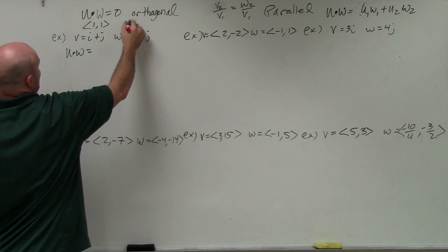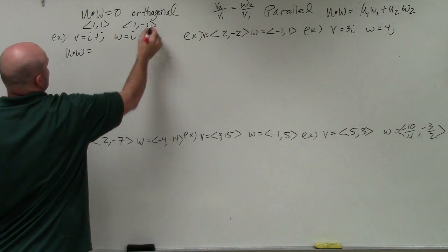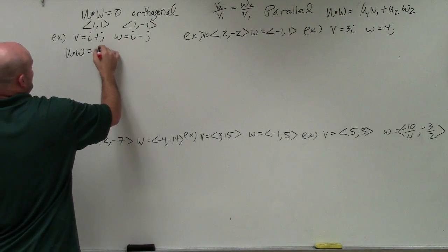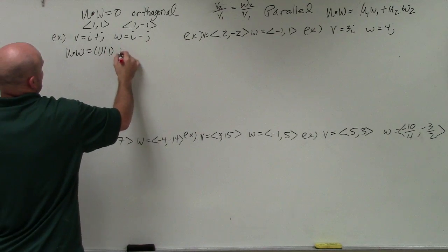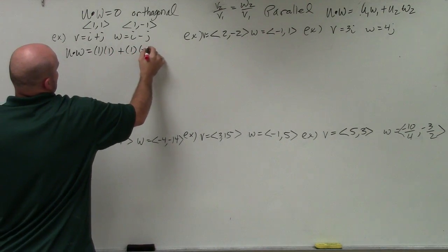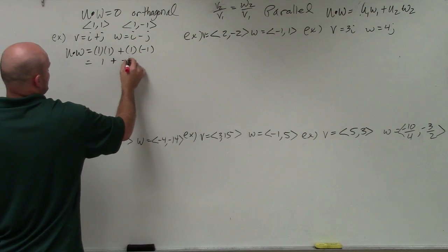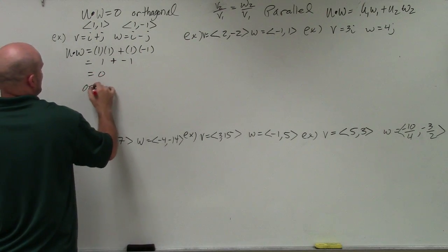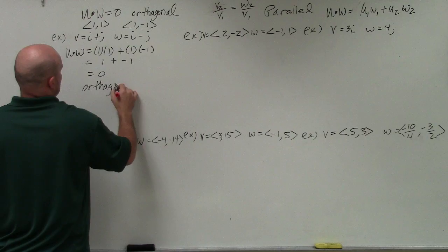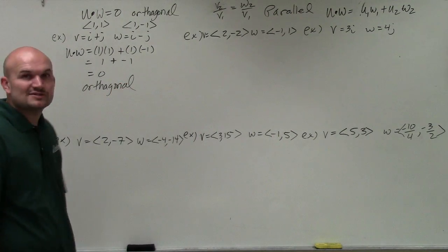So it's 1 comma 1 as well as 1 comma negative 1. So when I multiply these, I get 1 times 1 plus 1 times negative 1. Well, that gives me 1 plus negative 1, which gives me 0. So my first answer is orthogonal.